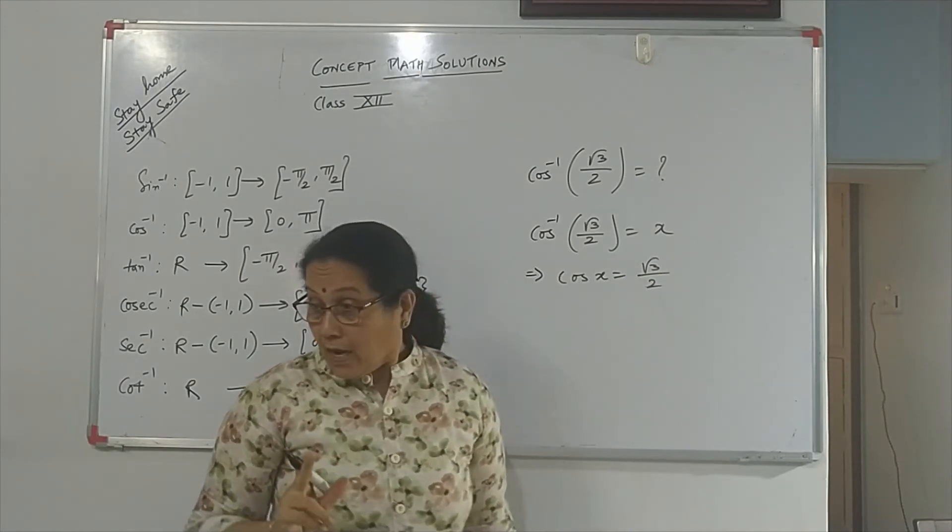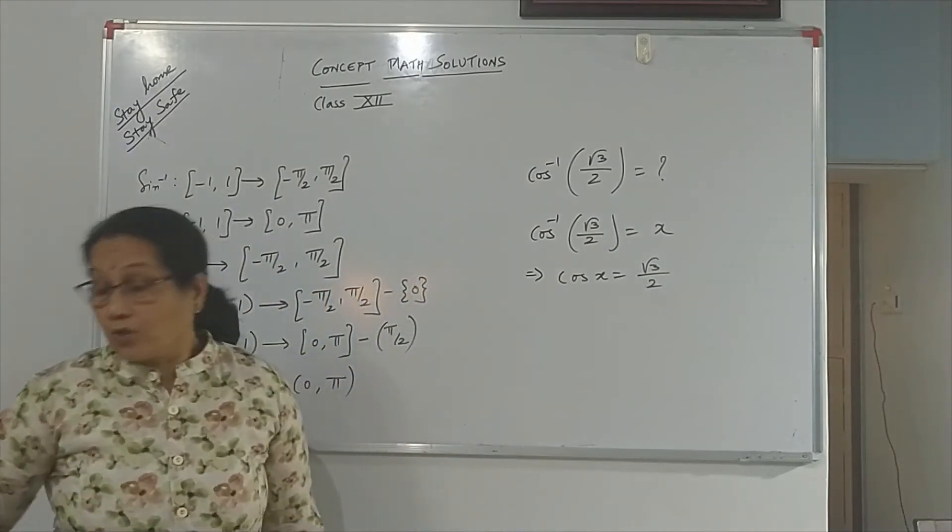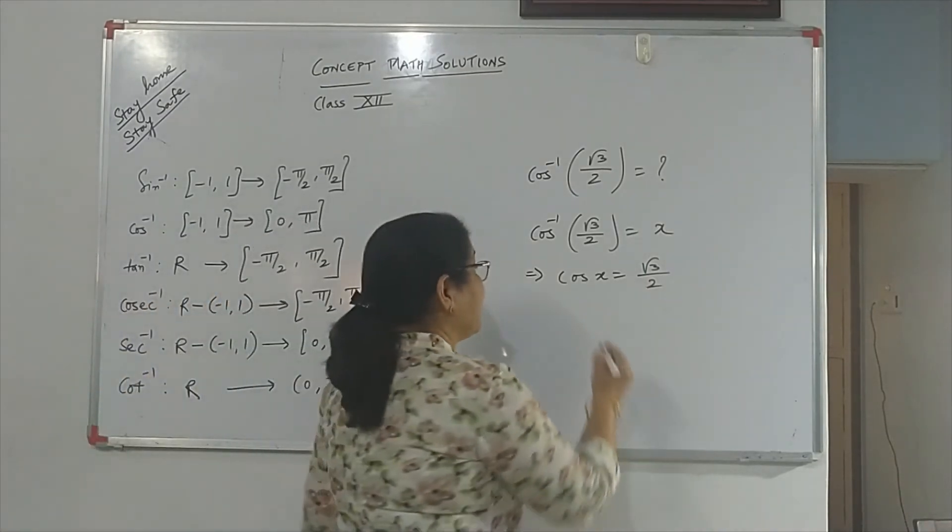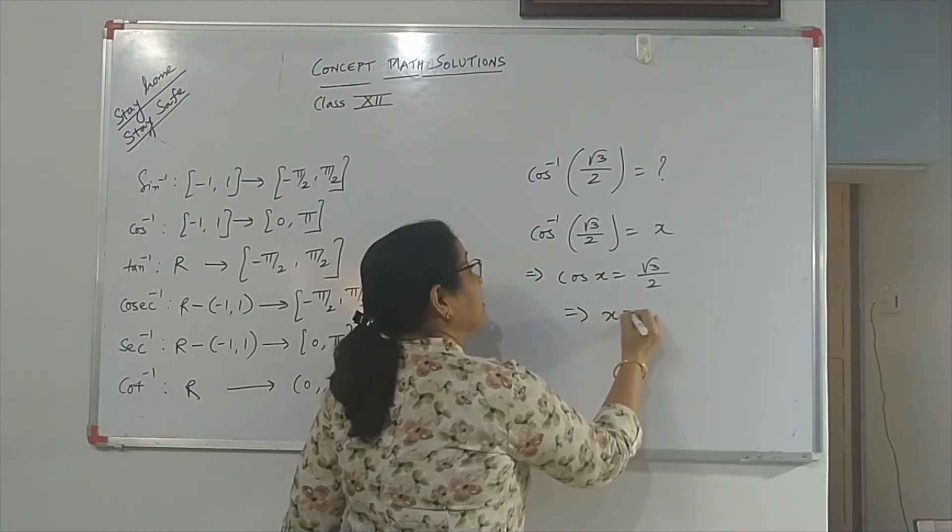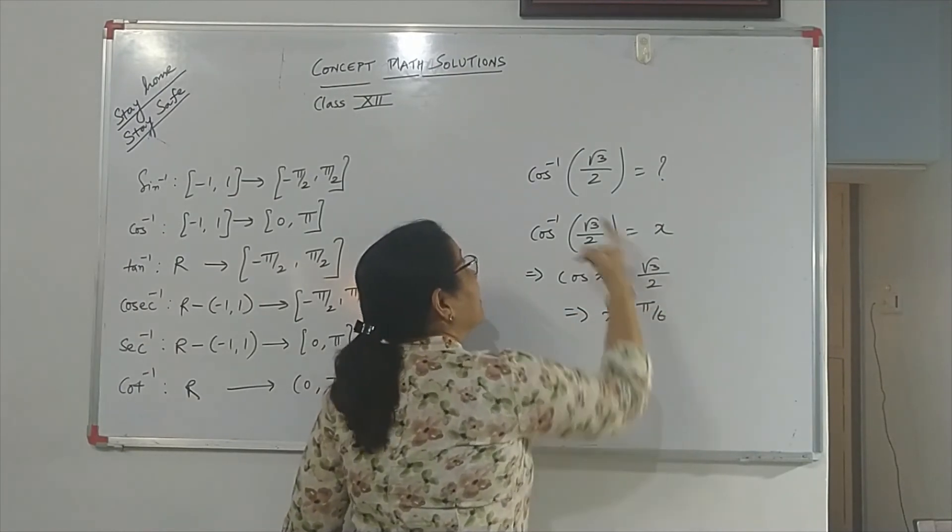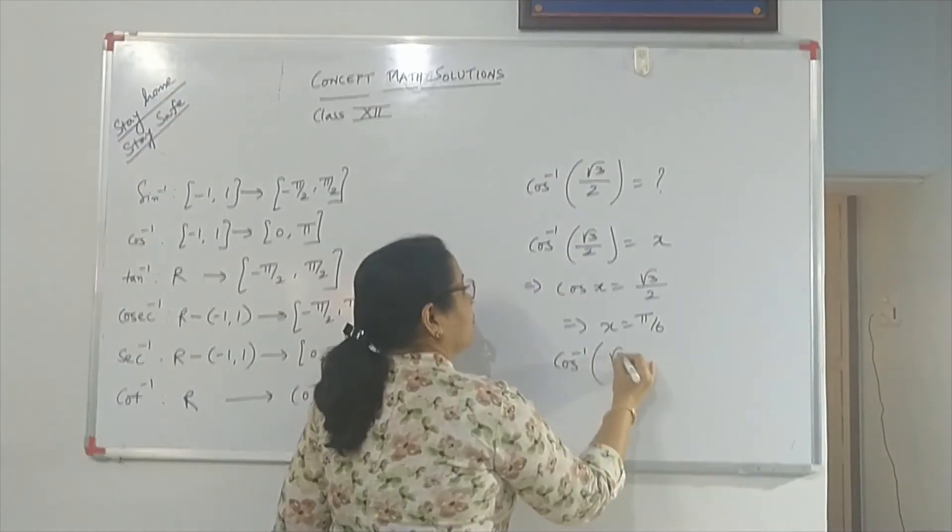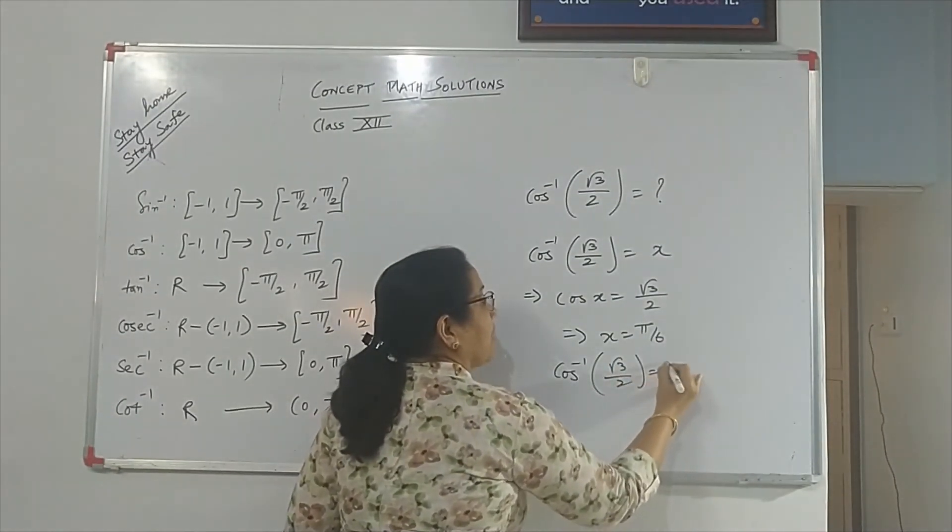You all remember when cos equals root 3 by 2. The value is π by 6. That means x is π by 6. That is the answer. Cos inverse of root 3 by 2 is π by 6.